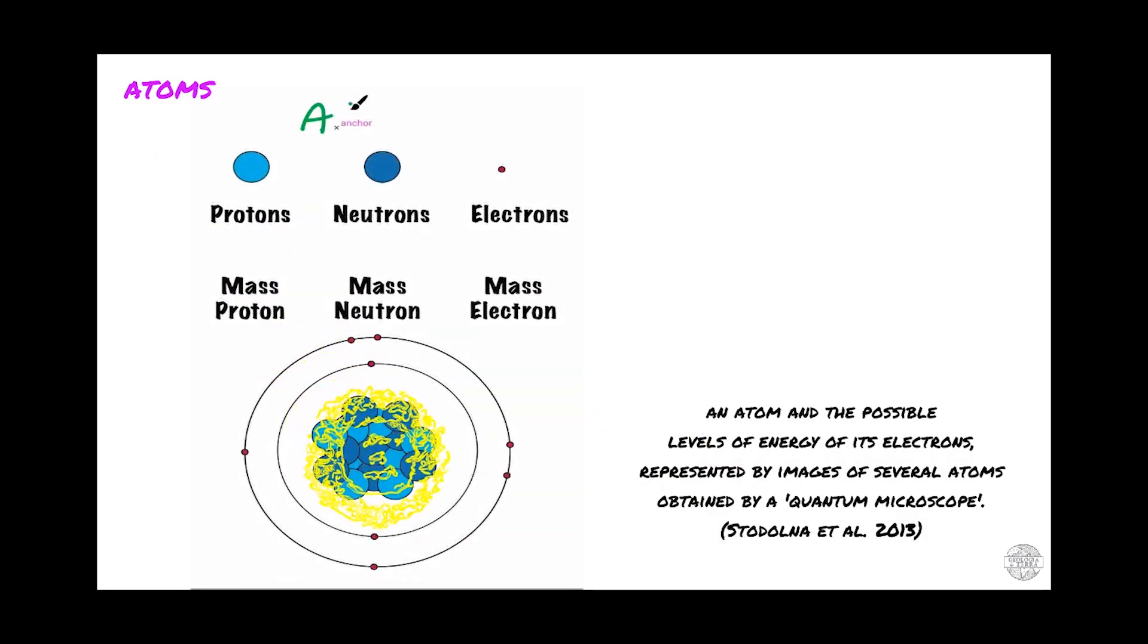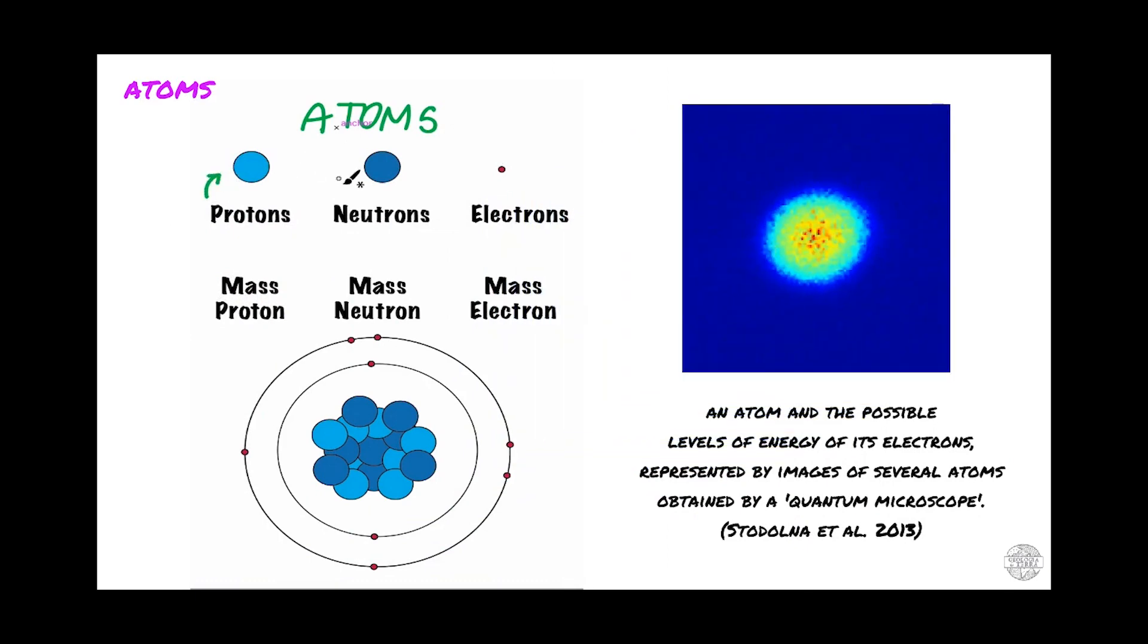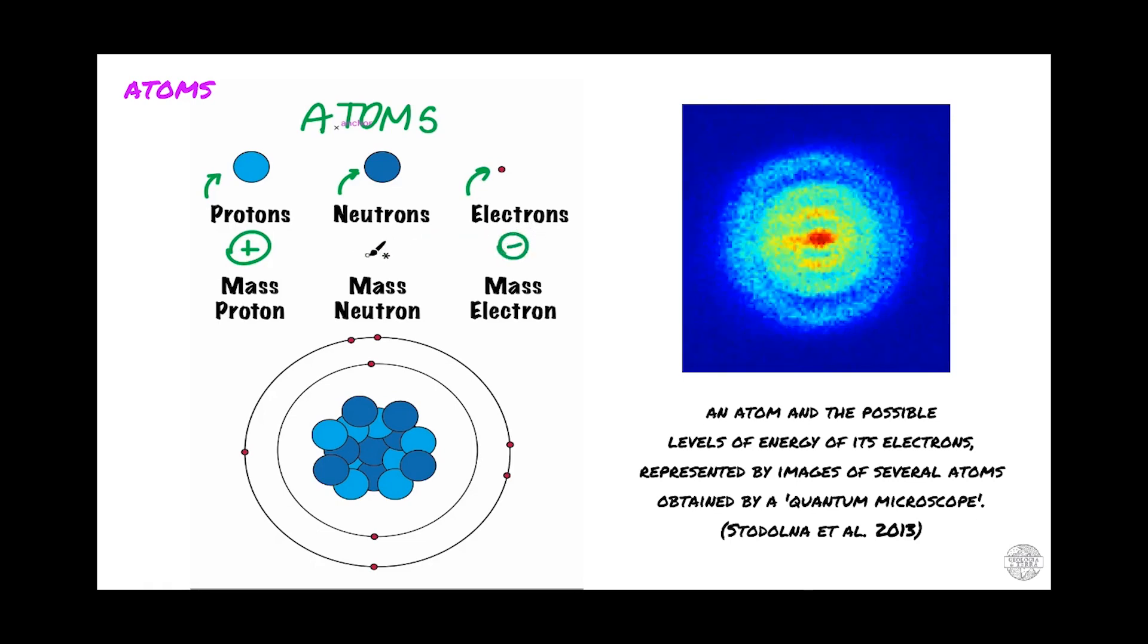In the most simple description, atoms consist of protons, neutrons, and electrons. The protons are positively charged particles, the electrons are negatively charged, and the neutrons have no charge.